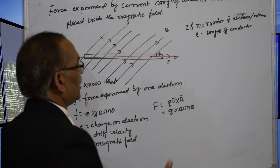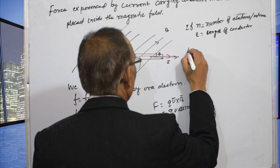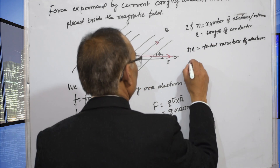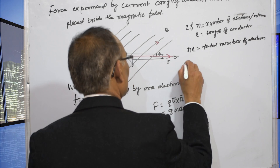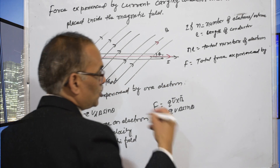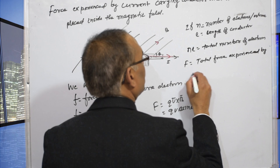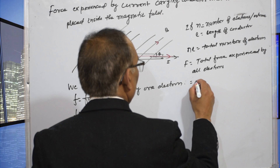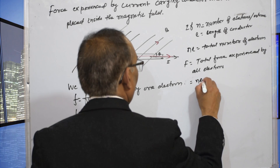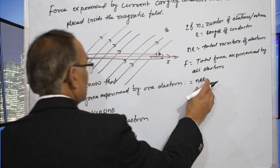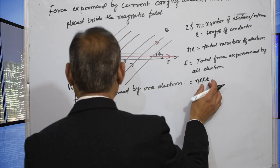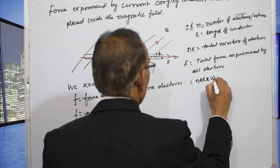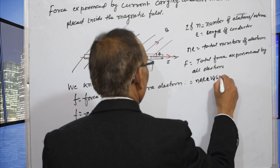If there are N number of electrons, the total number of electrons is N into A into L. So the total force experienced is N A L E V_d B sin theta, where N A L is the total charge and V_d is the drift velocity.